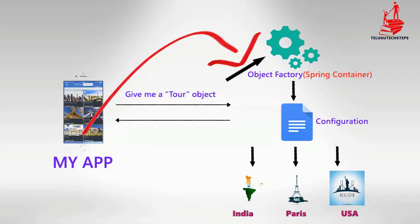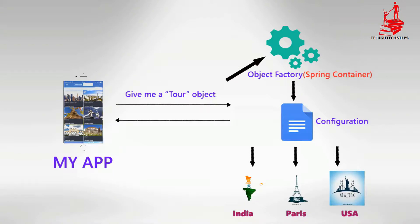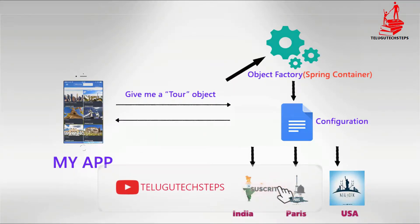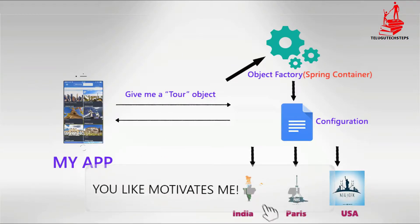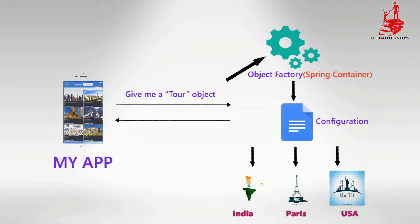We tell the Spring Container that we have a tour object. Through our application, we can talk to Spring Container. When we ask like that, Spring checks the configuration file — whatever we have given there. For example, for India, we are going to provide an object. Whenever Spring gives it like that, the application becomes configurable. At the same time, we get dynamic results.